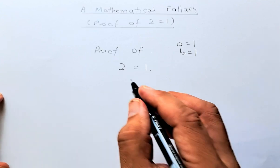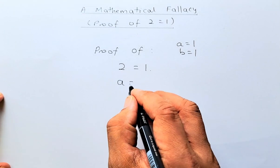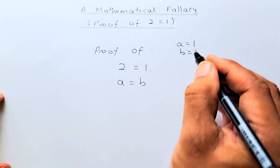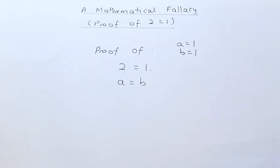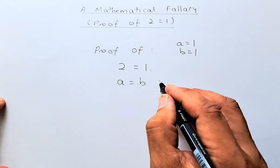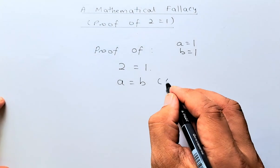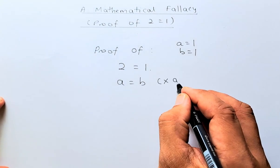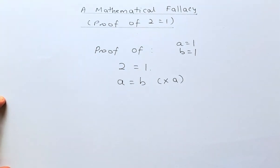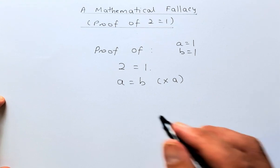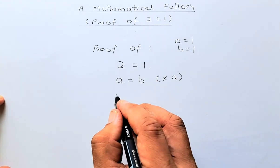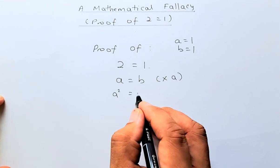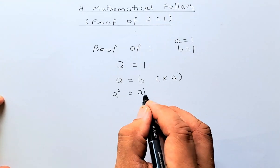We are going to start by saying A equals to B, because both of them are 1. The first thing I'm going to do is multiply that equation by A. When I multiply that equation by A, we will get A squared equals to AB.